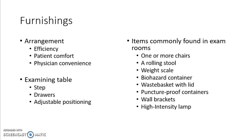There are wall brackets with certain items: the blood pressure cuff, otoscope, and ophthalmoscope are usually mounted on the wall. There's usually a high-intensity lamp for checking rashes, performing procedures, or for gynecologic exams where added light is needed.